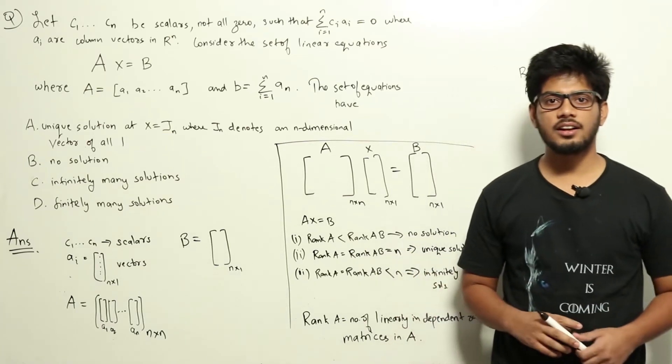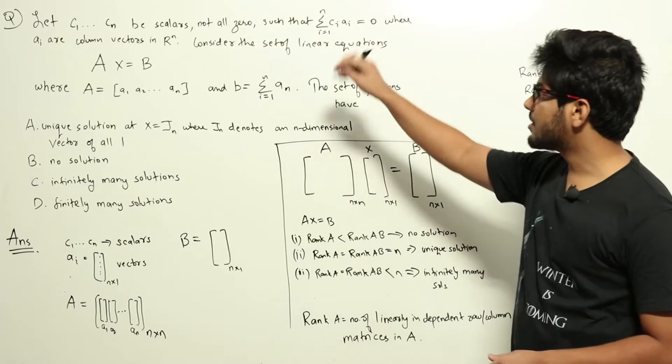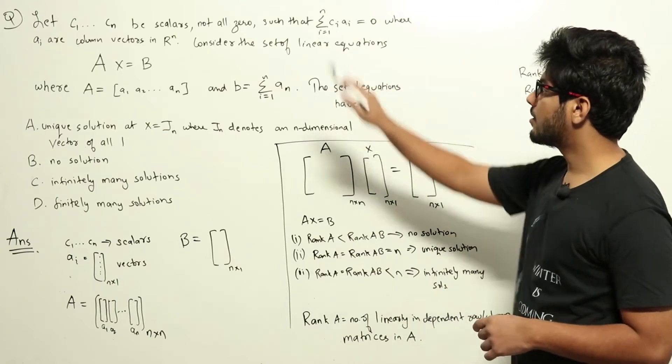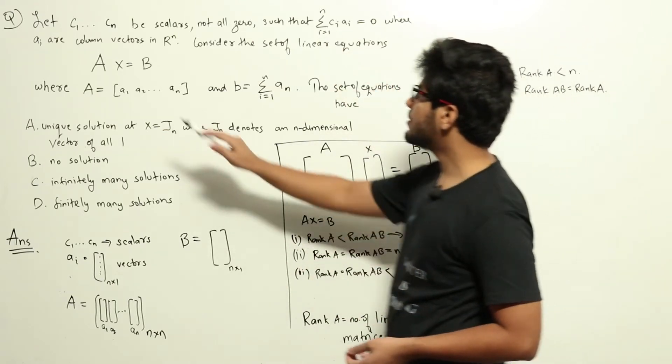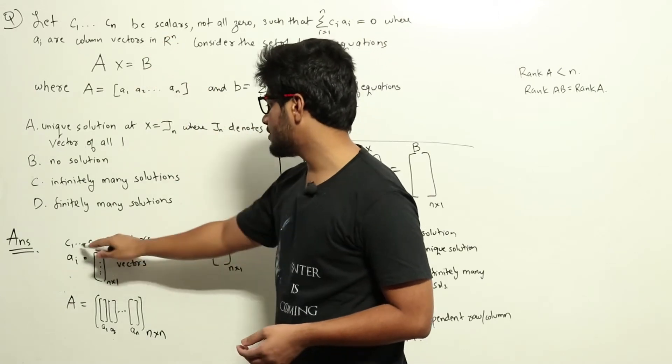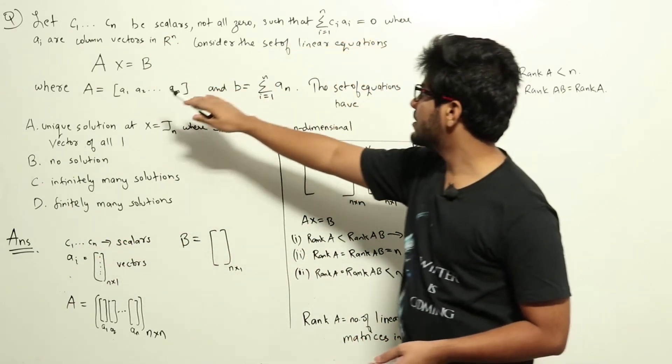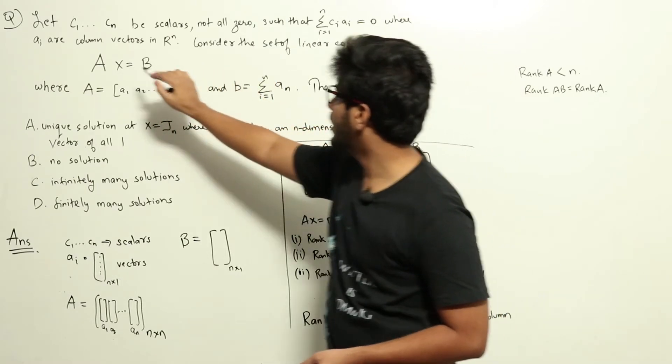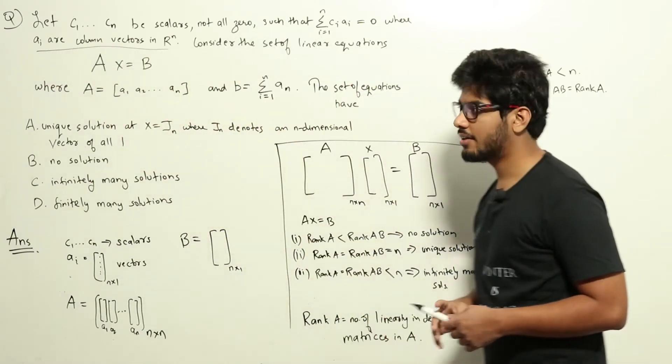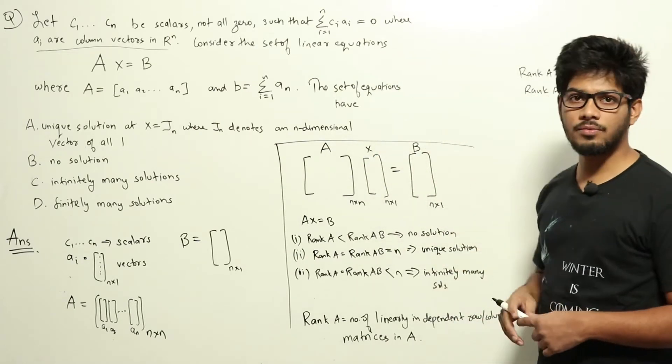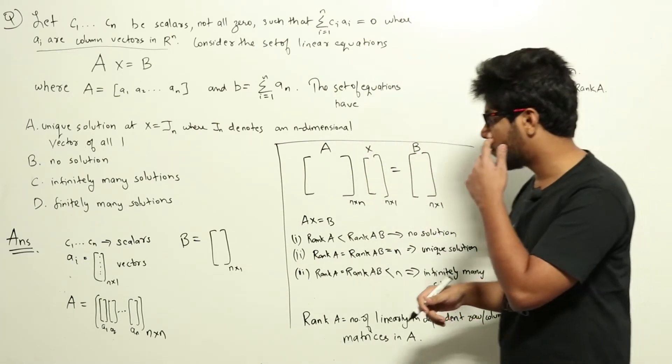This is a question from linear algebra. They have framed the question in a bit confusing format, so I will break it down for you. c1 to cn are scalars, meaning c1 to cn are just real numbers, and a1 to an are column vectors in R^n, meaning each ai is a column vector of n rows and one column.